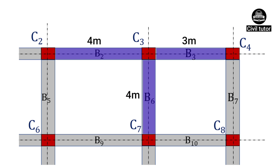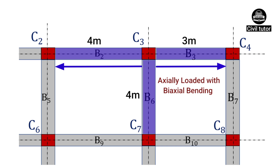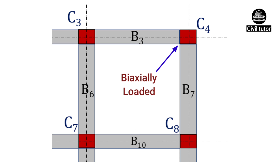C3 is connected by beams B2, B3, and B6. Since the beams on opposite sides — B2 and B3 — have unequal spans, and because of asymmetrical loading, there will be some moment generated due to B2 and B3. B6 will also create a moment on this column. As a result, the effect of load will be eccentric along both axes. Therefore, column C3 is an axially loaded column with biaxial bending. C4 also satisfies the criteria of biaxial bending, since C4 is connected by beams B3 and B7, which are aligned perpendicular to each other, making the load eccentric along both axes — as in the case of column C1.